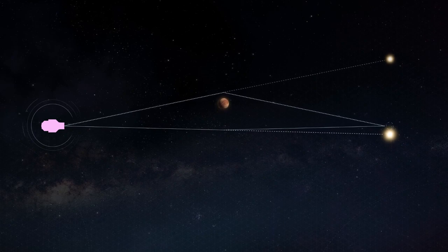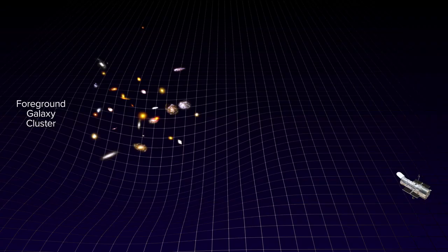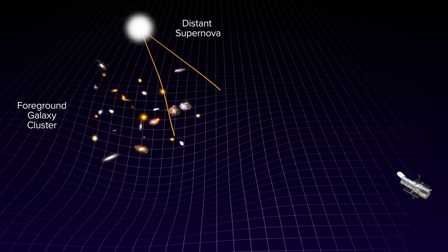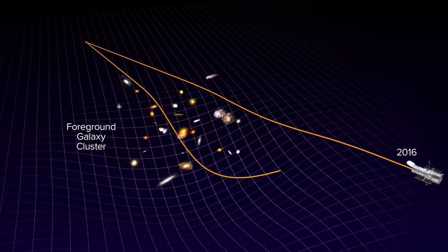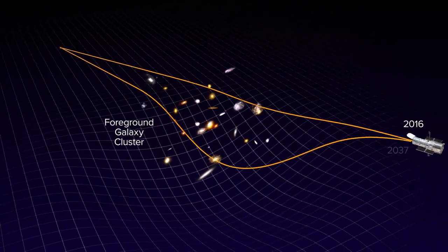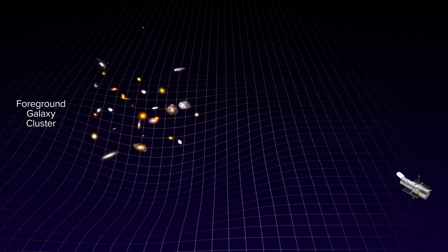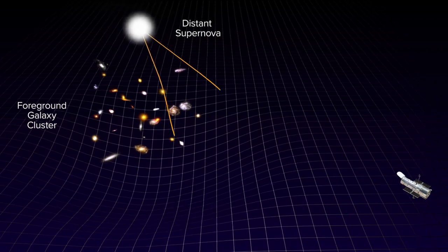Gravitational lensing provides a powerful tool for astronomers to study the distribution of matter in the universe, including both visible matter such as galaxies and galaxy clusters, and invisible dark matter. It has been used to confirm the existence of dark matter, map the mass distribution in galaxy clusters, and even discover and study distant galaxies that would otherwise be too faint to observe directly.